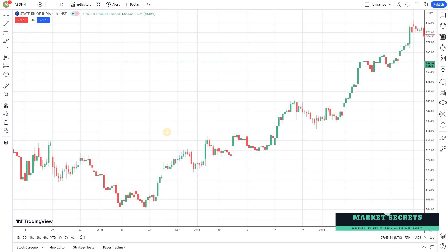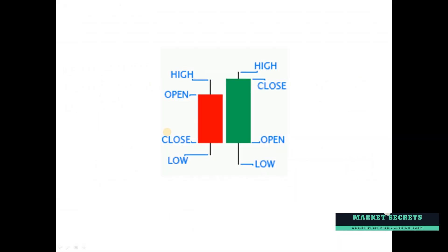Before we get to the scripting part, we need to understand the anatomy of candles. There are four built-in PineScript variables we have to work with in order to detect candle patterns: open price, close price, high price, and low price. Using these four variables we can determine if a candle meets the criteria to be called a certain pattern such as an engulfing pattern.